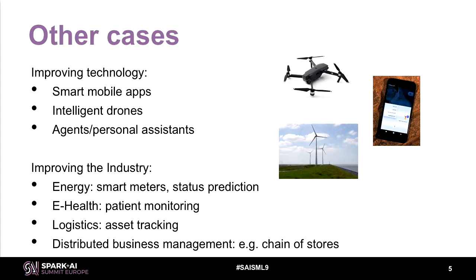Beyond the IoT space there are other common use cases: improving mobile applications, building more intelligent systems like drones, and industry applications. In e-health, for example, you're trying to do better monitoring of people and be faster and smarter when assessing someone's health status. In logistics, you can do smarter asset tracking.